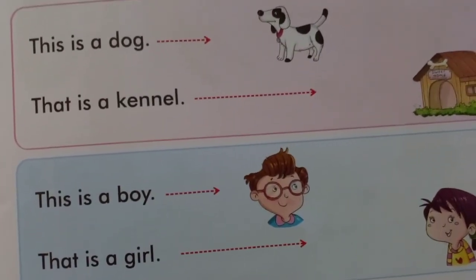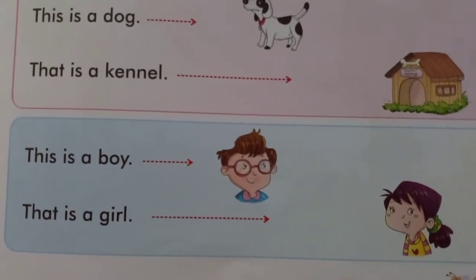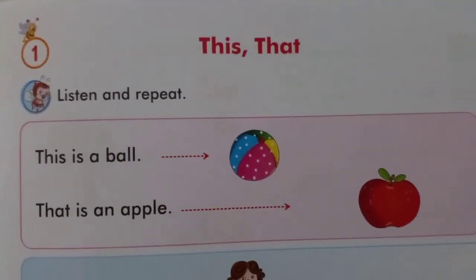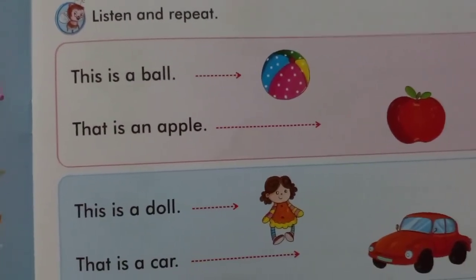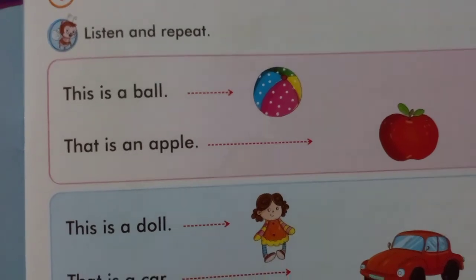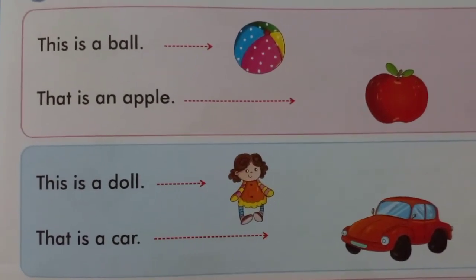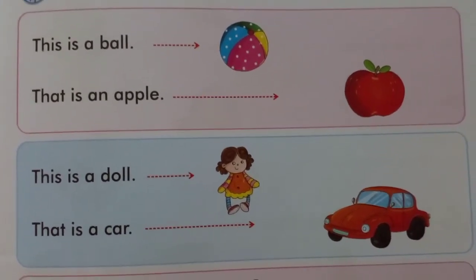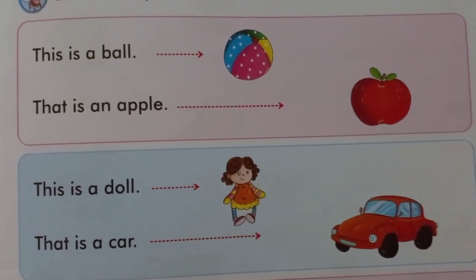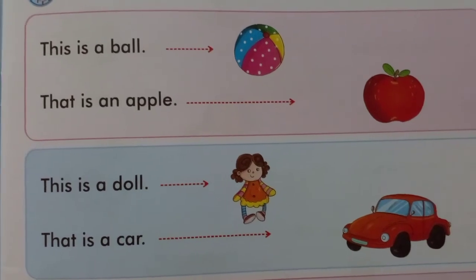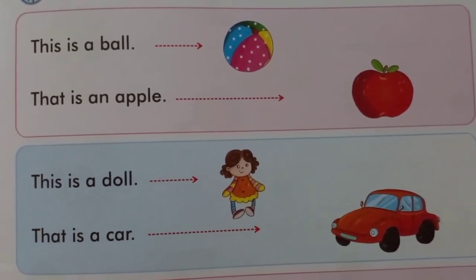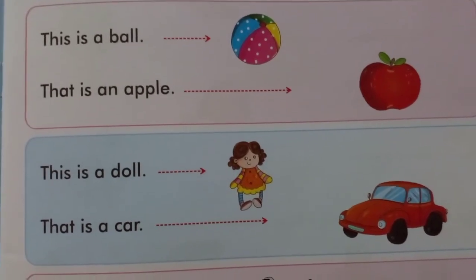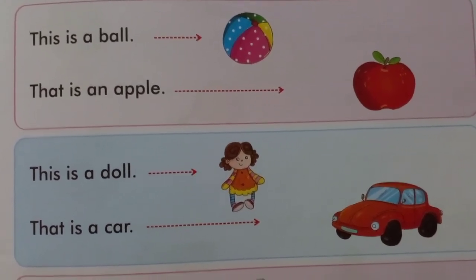This is a boy — the boy is near. That is a girl — the girl is far. In this way you have to learn the concept of 'this' and 'that.' Parents, kindly note: initially let them read and repeat. You read once and then the children will repeat it. As they listen and repeat, the concept of 'this' and 'that' will become very clear. You can show this video to them and they will enjoy the concept. We will meet you soon in the next class. Till then, take care. Bye bye.